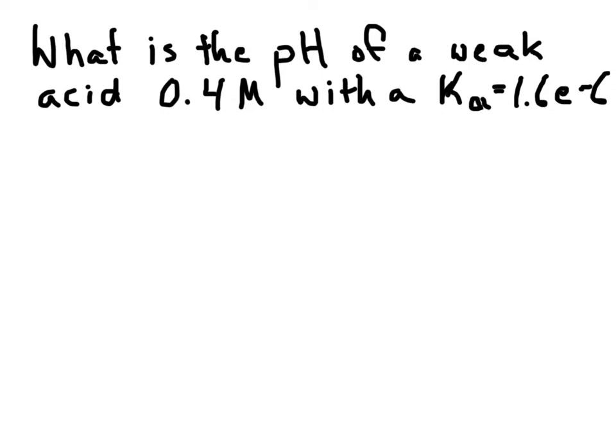Hey, this is Mr. Royce. I'm going to take you through this quick problem dealing with a weak acid and setting up an ICE chart and then solving eventually for the pH of our weak acid. So they give us the information that it is a 0.4 molar acid with a Ka value of 1.6e to the negative 6.